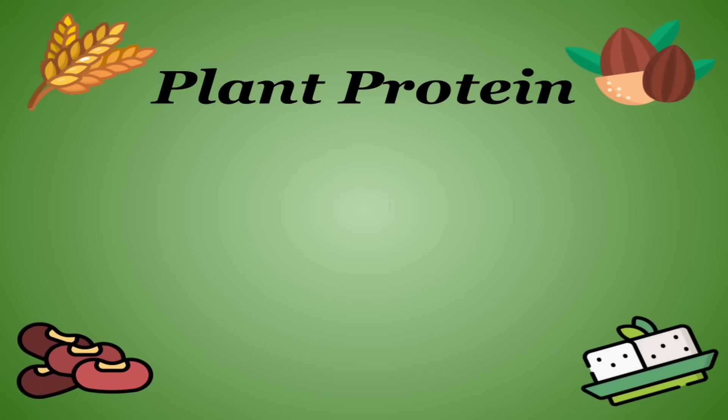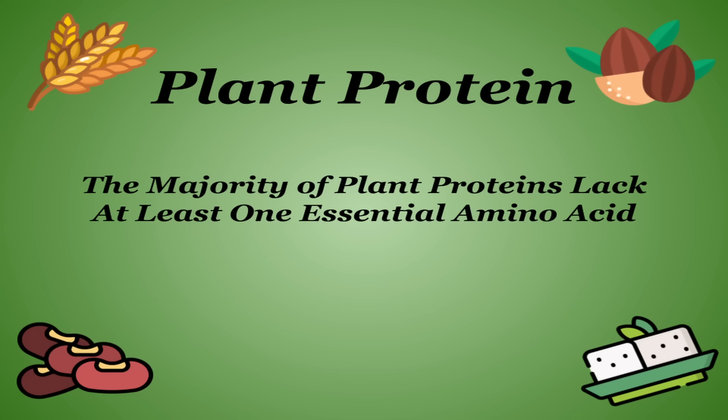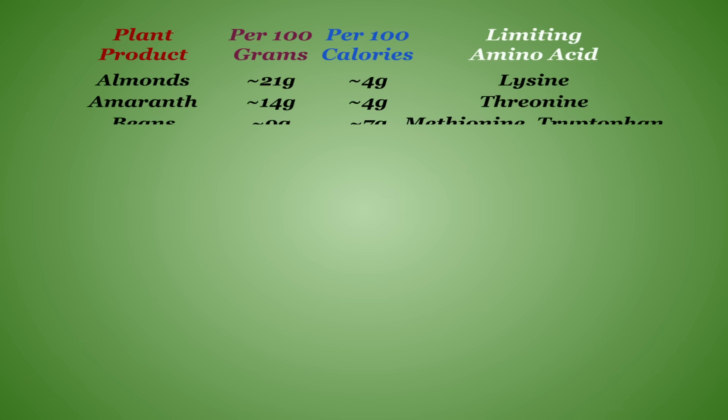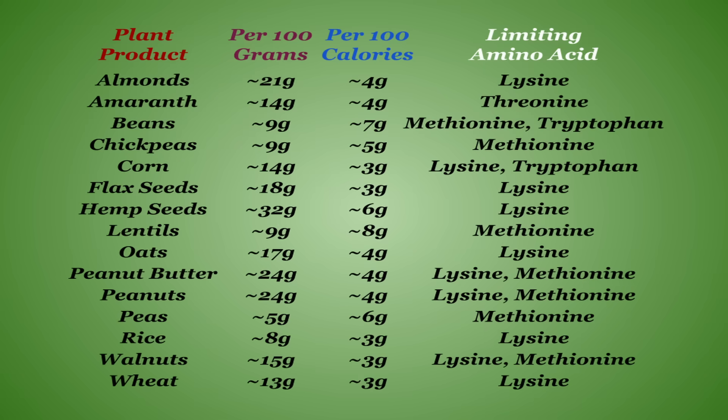Now, plant proteins are a whole other topic. The majority of reliable plant proteins lack a sufficient amount of at least one essential amino acid, making them what's referred to as an incomplete protein. I'll have a list of some of the most common plant proteins on screen, once again comparing protein per gram and per calorie, as well as the specific amino acid that the food tends to lack. For any foods that are not on this list that you're wondering about, this information is really not that hard to find.